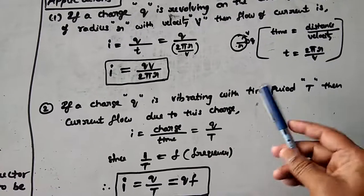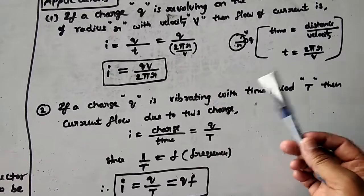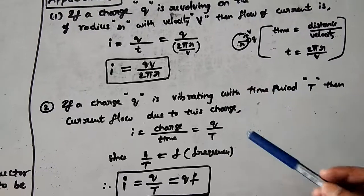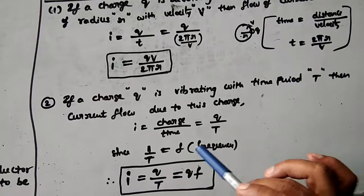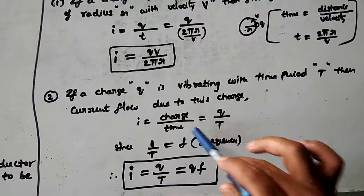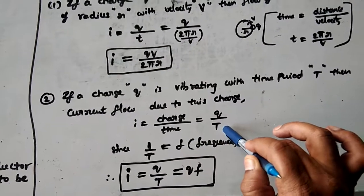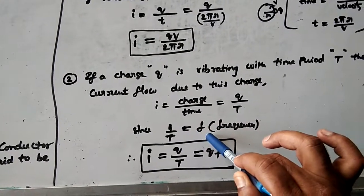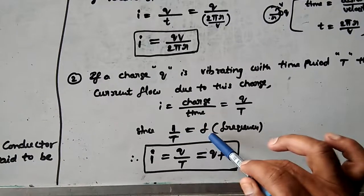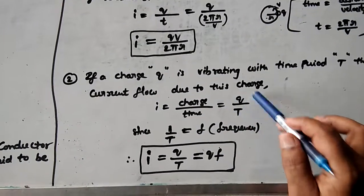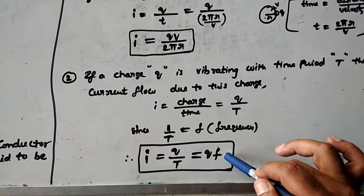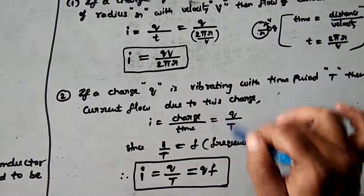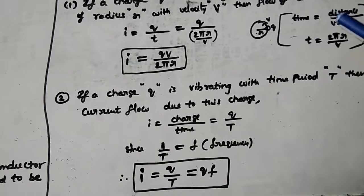Another application: a charge q is vibrating with time period T. Using I = q/t, the time here is the time period T. From 9th class concepts, 1/T is nothing but frequency f (in hertz). So I = q/T = qf. You may also get a numerical question based on this formula.